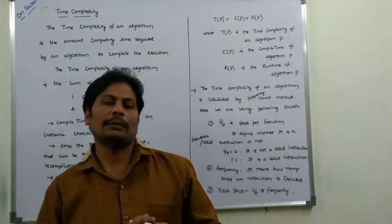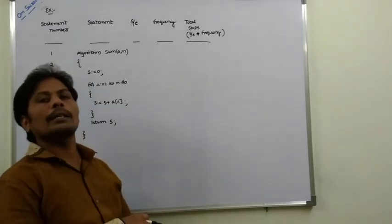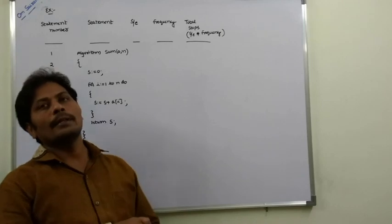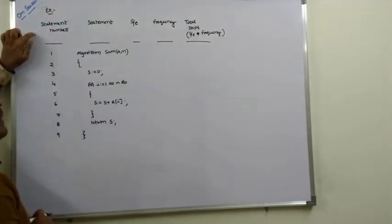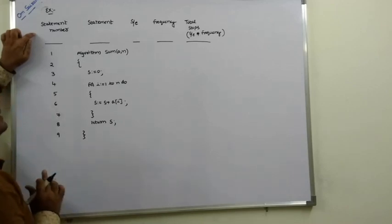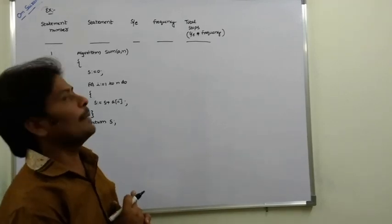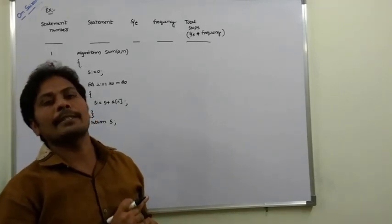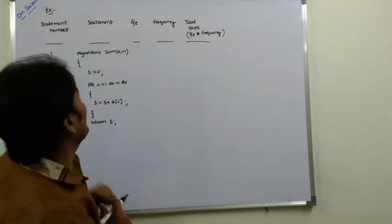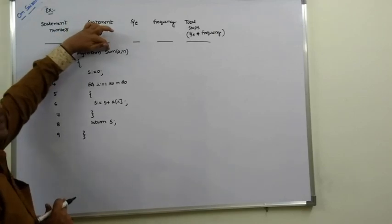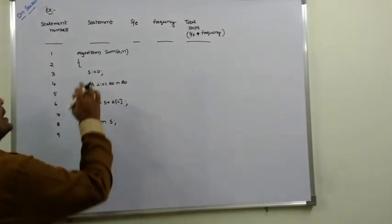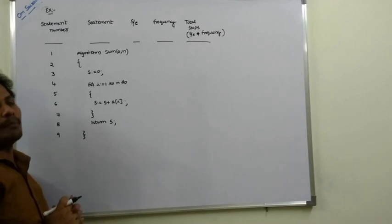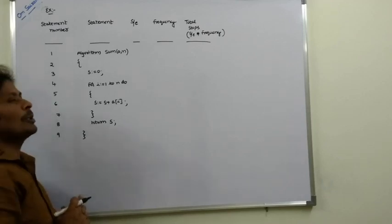Now we find the time complexity of the sum of n array elements. The algorithm name is 'sum', where A is an array containing n elements. Initially, the sum variable S is set to 0, meaning there is no sum yet.